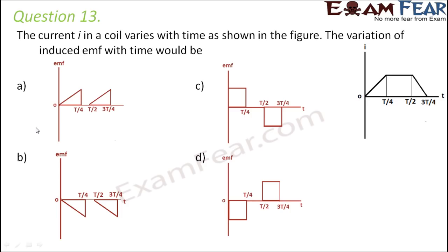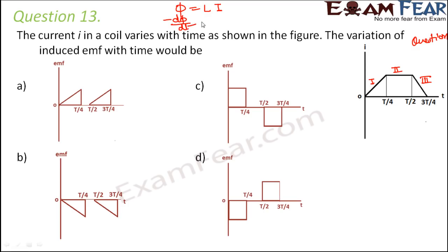Question number 13. The current I in a coil varies with time as shown in the figure, and we must find how induced EMF varies with time. We know that flux φ equals L·i, and induced EMF equals minus L·di/dt. The graph has three parts. In part 1, current increases with a constant slope, so di/dt is constant, meaning EMF is a negative constant.